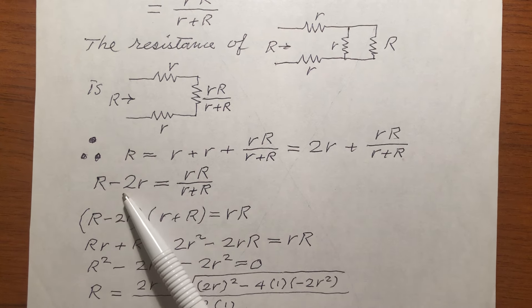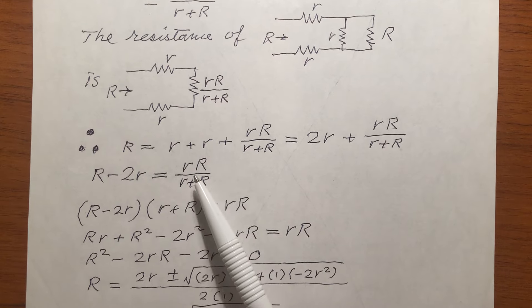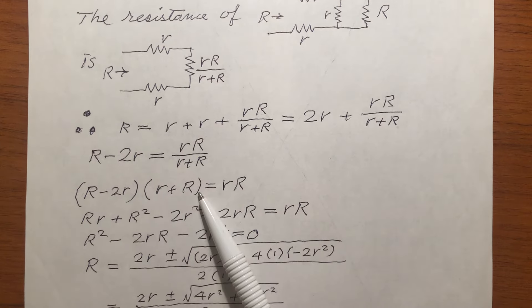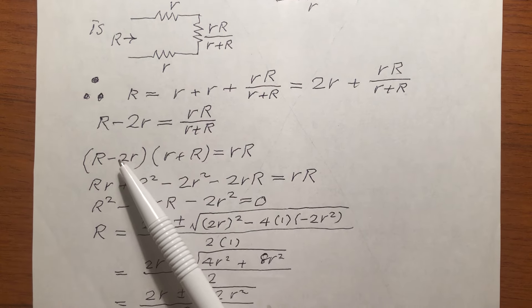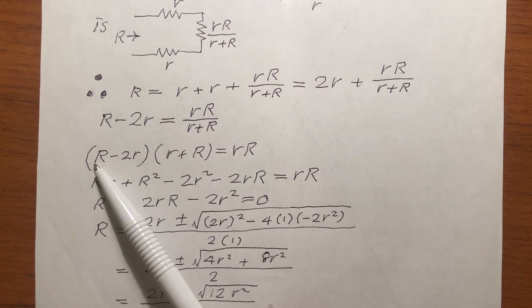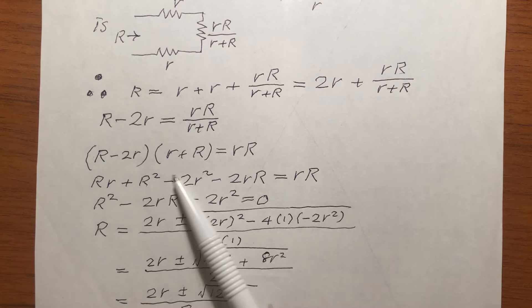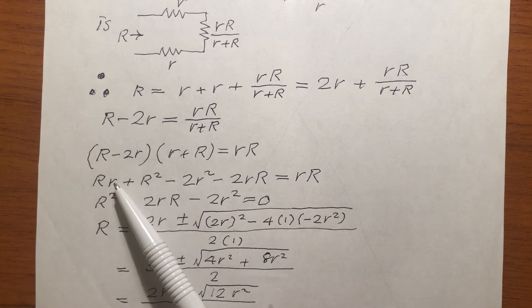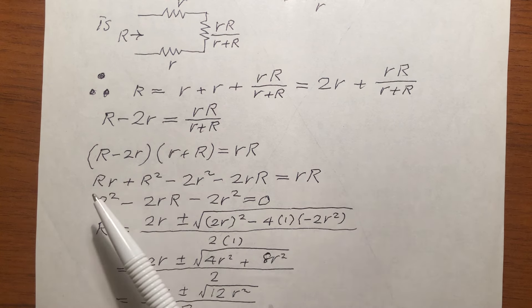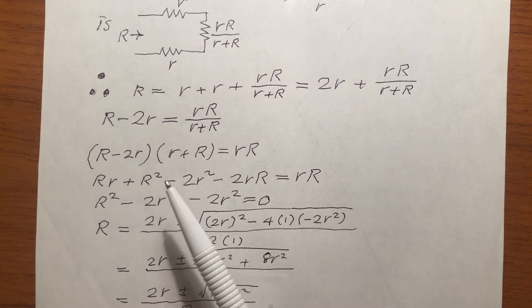So, I can cross multiply, I get this. And expand these two brackets, we expand it, we get this, capital R small r, capital R small r cancels, I have a quadratic equation. The quadratic equation is in capital R.